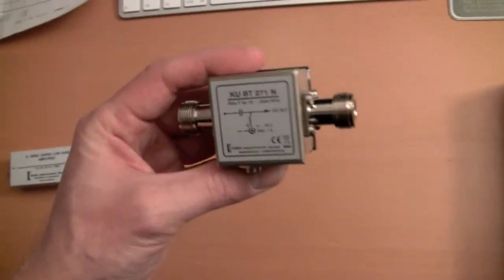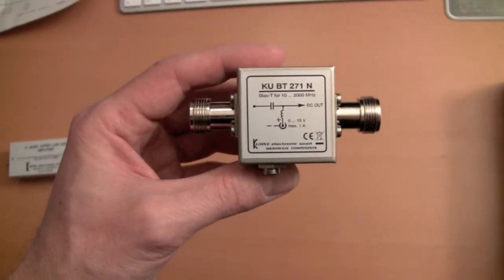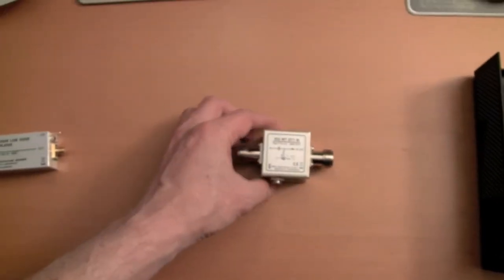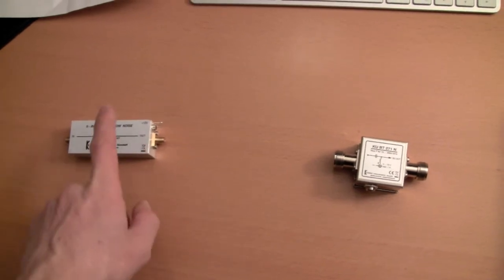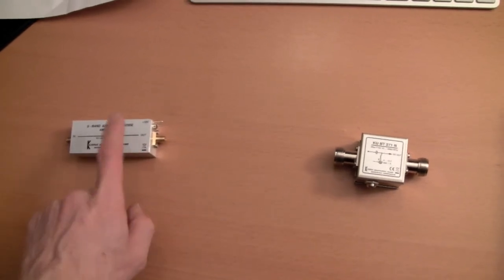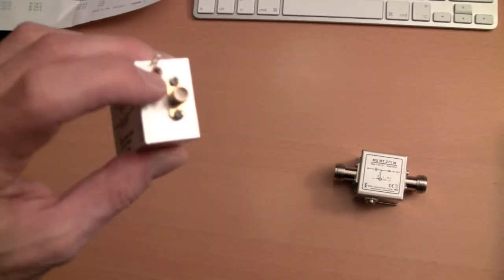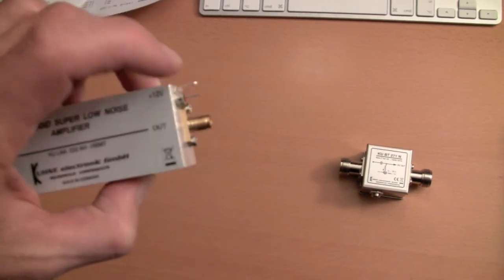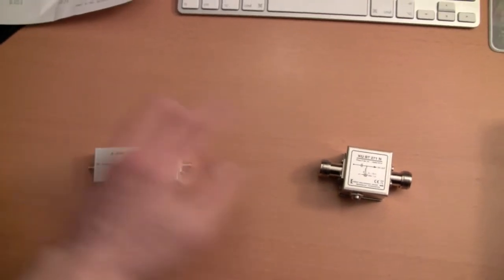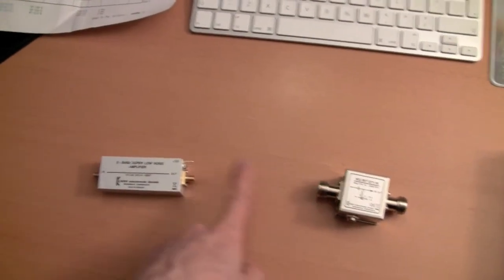The BIAS-T, I will use this to inject DC voltage into the coax cable. The coax cable will go to the low noise amplifier because it needs power to function. I could use this input for the supply voltage using separate wires, but instead of having separate wires going from the power supply to the low noise amplifier, I will just use the coax cable for that.